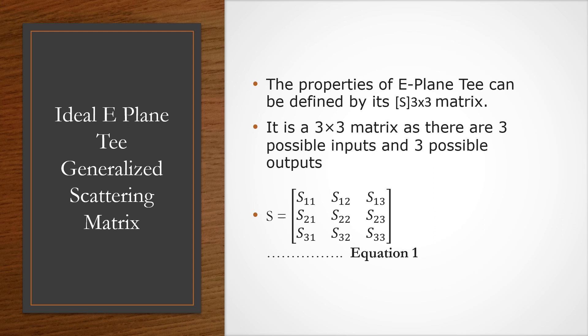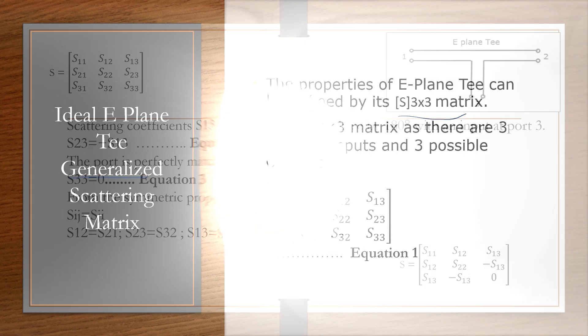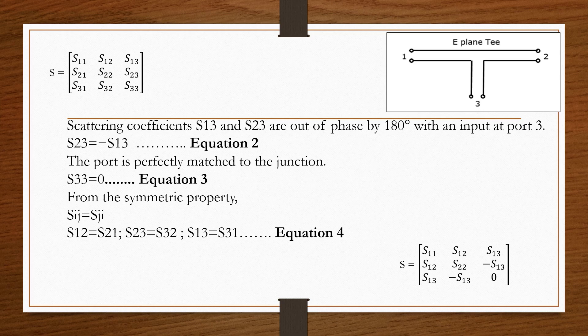For the scattering matrix, E-plane T has 3 ports, so it is a 3×3 S-matrix: S11, S12, S13, S21, S22, S23, S31, S32, S33. This is the generalized scattering matrix for E-plane T.